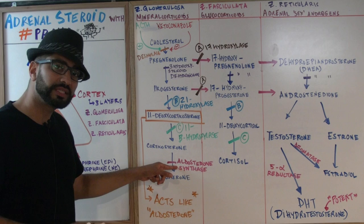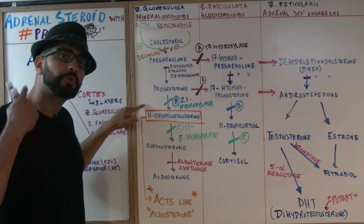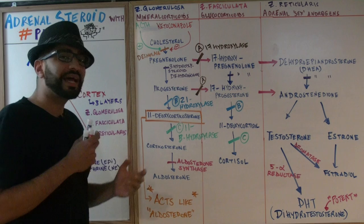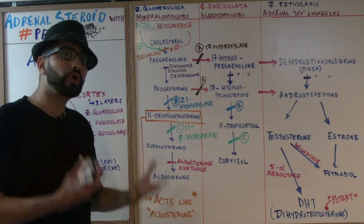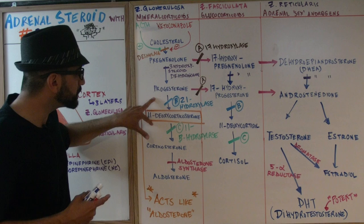One thing to remember — and this will be important in next week's lecture — 11-deoxycorticosterone has aldosterone-like properties. It's a very weak mineralocorticoid, but if this product accumulates, it has very strong aldosterone-like properties. Keep that in mind because next week when we talk about enzyme deficiencies, we'll see how 11-deoxycorticosterone plays a very important role.